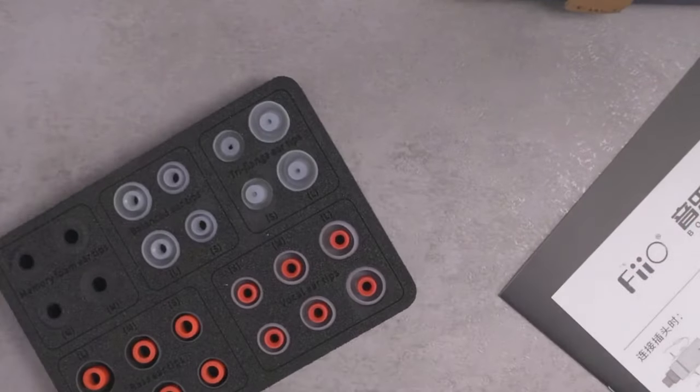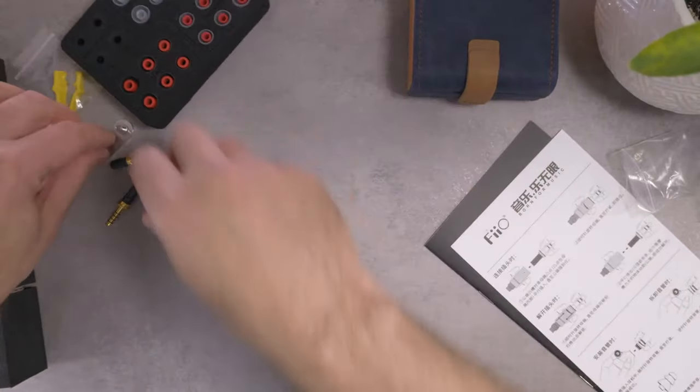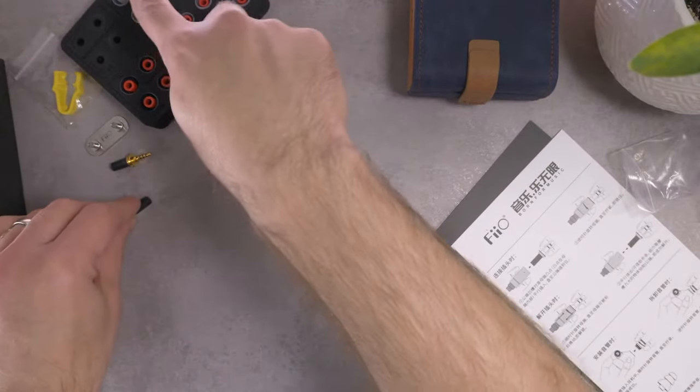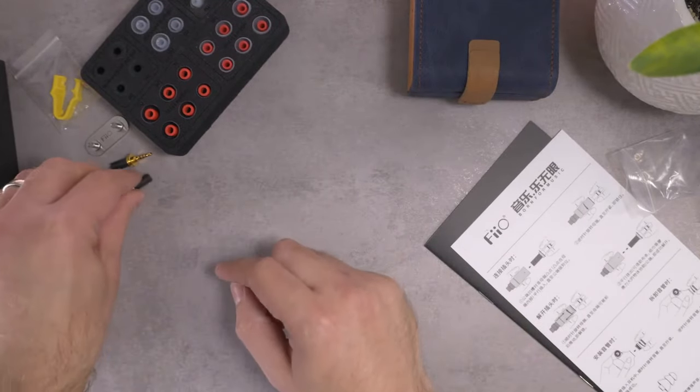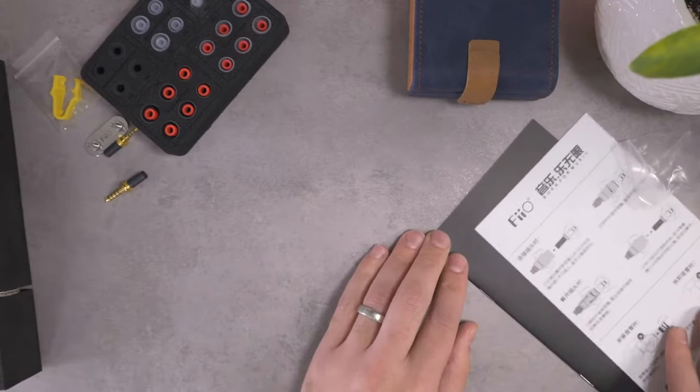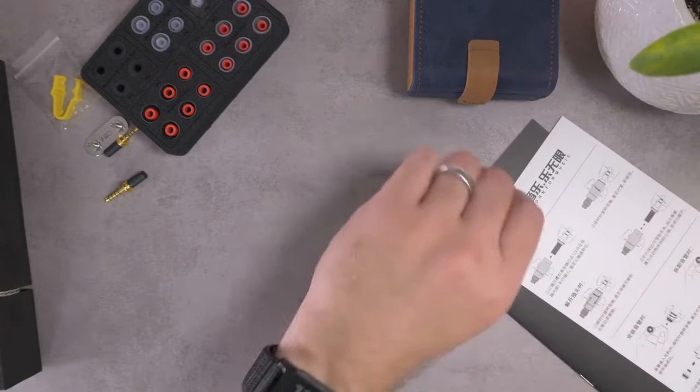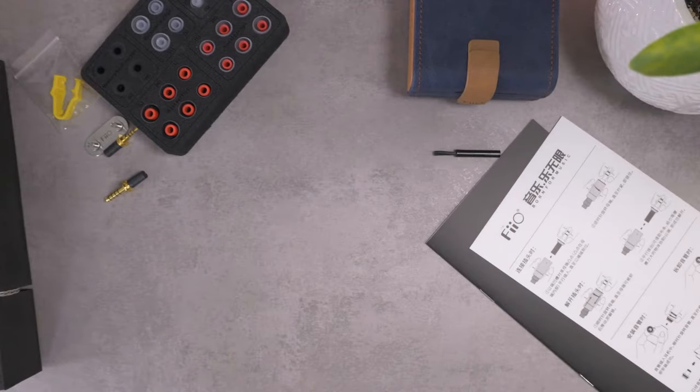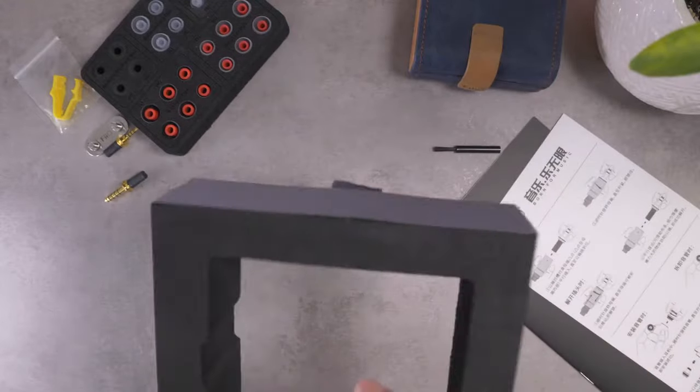Down here you've got your vocal ear tips, and then here you've got your bass ear tips. Typically I just use whatever they include stock, which I'm guessing based on the fact that there are two pairs of balanced tips here, that the thing is going to be pre-installed with balanced tips. Unsurprising.